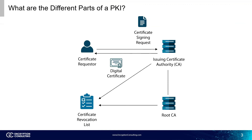There is another much faster way to check the status of certificates called the online certificate status protocol, or OCSP. This is a much faster method, but all it gives is the status of the certificate — it does not include all the details of the certificate or why it was revoked.